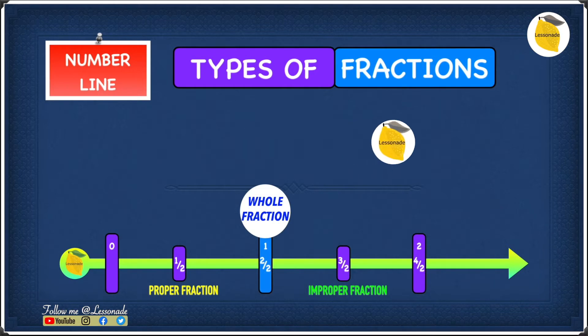Now let's use the number line to get a better understanding of types of fractions. On this number line, we have 0, 1 over 2, a whole fraction which is 1, then 3 over 2, then 2, and so on.